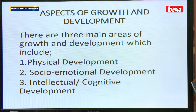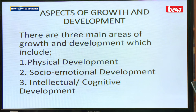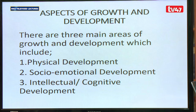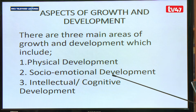As we continue, we will continue using growth and development together. In the study of child development, we don't just look at growth of a child holistically; we look at specific aspects. There are three main areas of growth and development: physical development, social-emotional development, and intellectual or cognitive development.